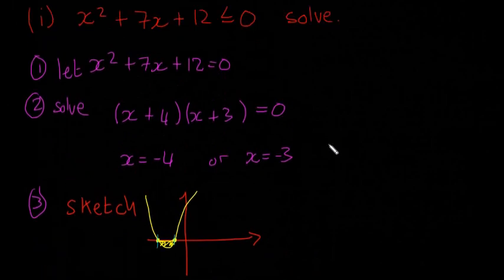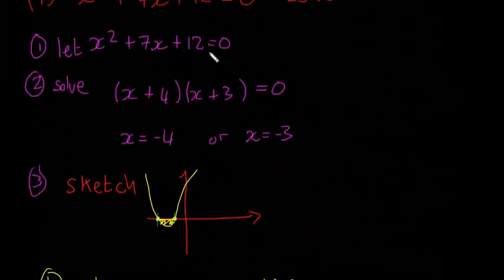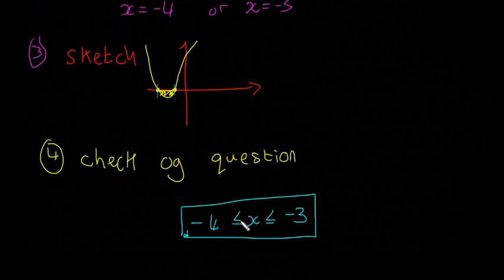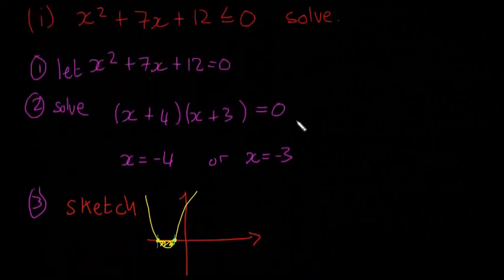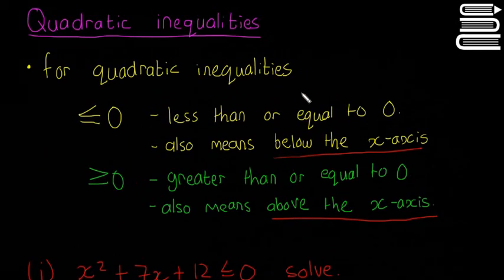So hopefully that method made sense. It's the same four steps every time. You're going to let it equal to 0, you're going to solve it normally, you're going to sketch it, and then check the original question just to get the direction of these things right. So we're going to do another example in the next video, and it's going to be just a small bit harder. But hopefully you guys thought that was okay. And just remember these points here about quadratic inequalities. We'll see you next time.